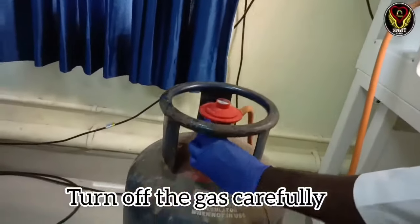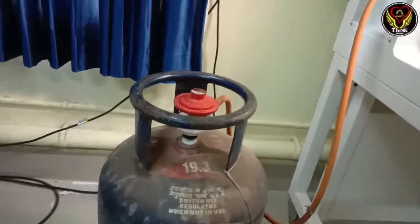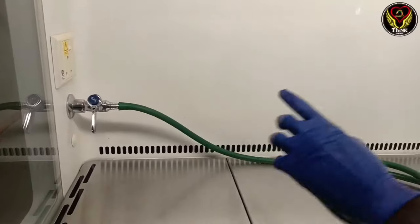There is a proper procedure when turning off the gas. First, we have to turn off the gas tap. Then we will turn off the bunsen burner.